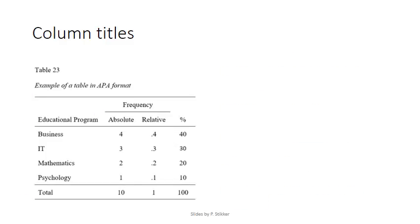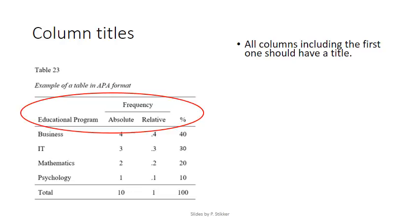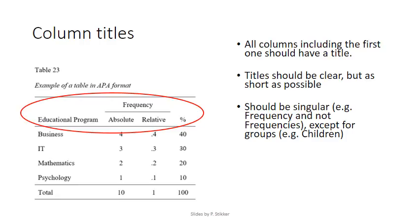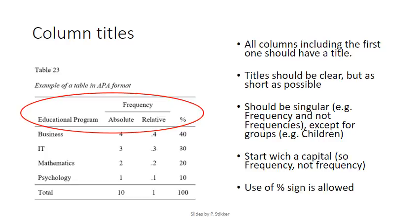There are also a few rules about column titles. All columns, including the first one, should have a title. The title should be clear but as short as possible, and should be singular — so use 'frequency,' not 'frequencies.' Start with a capital letter. The percentage sign is also allowed to be used, as shown in this example.